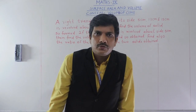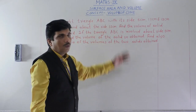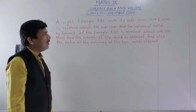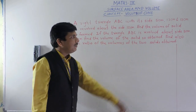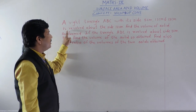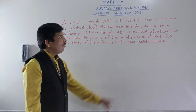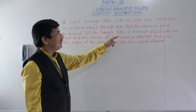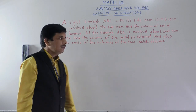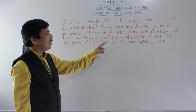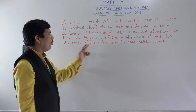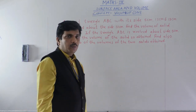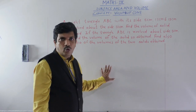Today we are going to see some problems which depend on the concept of volume of cone. The first problem is: a right triangle ABC with its sides 5 cm, 12 cm and 13 cm is revolved about the side 12 cm. Find the volume of the solid so formed.